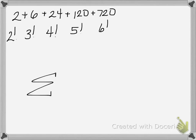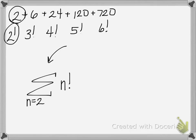Once we realize that we have a factorial pattern, we can start on sigma notation. We could write n factorial, but if we choose n factorial for our formula, we would not start at n equals 1, because we want 2 factorial for our first term. So we start with n equals 2. The very last value to substitute in would be 6, because the last term of the sequence is 6 factorial, which is 720.